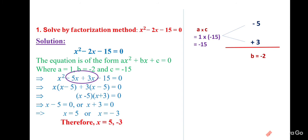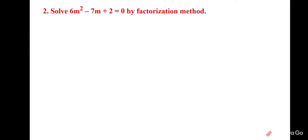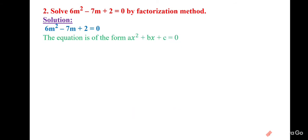These are the two solutions of x² − 2x − 15 = 0. Moving to the second equation — any variable from a to z can be used. Here the quadratic equation is in terms of m. Comparing with ax² + bx + c = 0, we get a = 6, b = −7, and c = 2.